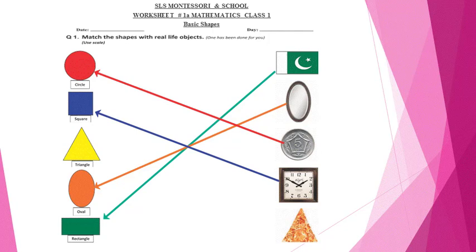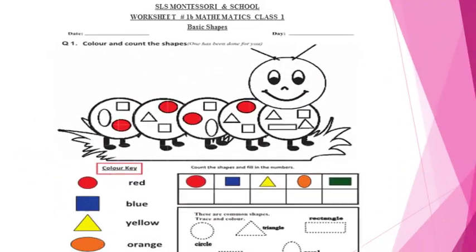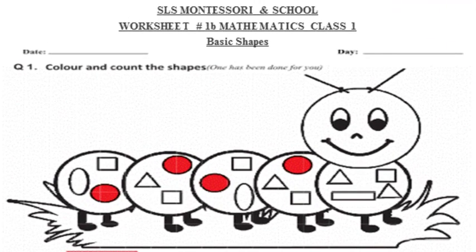The last object is a slice of pizza. The shape of the pizza is like a triangle, so match it with a triangle. I have done this worksheet for your help, but you try to do it independently. Draw the lines with the ruler to make your work neat and tidy.